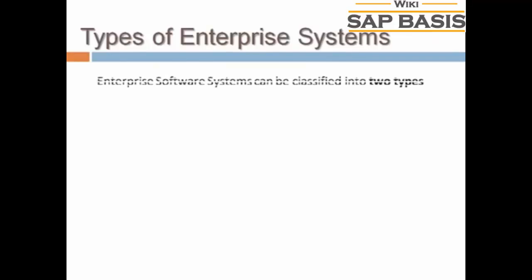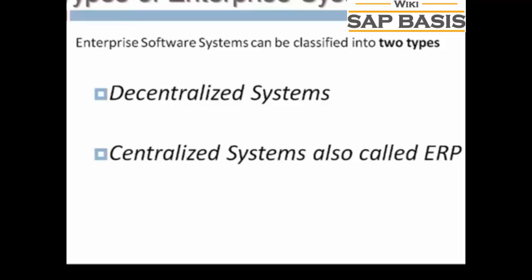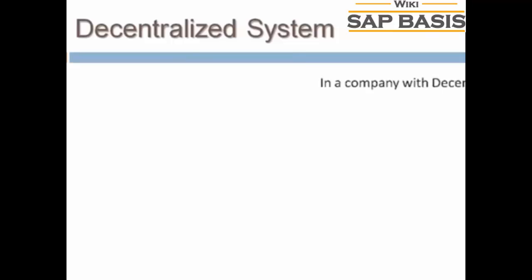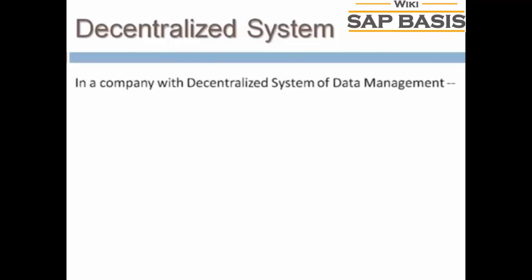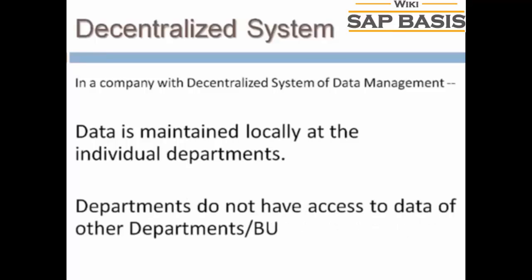Based on the manner in which communication and data exchange is managed, enterprise software systems can be broadly classified as decentralized systems or centralized systems, which are also called ERP. In a company with a decentralized system of data management, data is maintained locally at the individual departments. Departments do not have access to information or data of other departments.